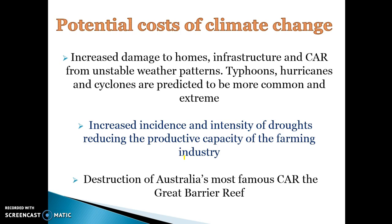The potential costs of climate change relate back to negative externalities. It can lead to increased damage of homes and hurt essential infrastructure because we have things like natural disasters, cyclones, typhoons, and hurricanes.